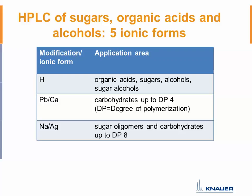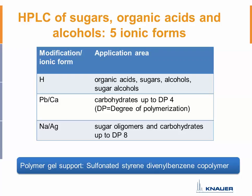If you want to analyze different carbohydrate mixtures and sugars up to a degree of polymerization of four — so these are really small sugars — you have to use the ionic form lead or maybe calcium. But if you want to analyze sugar oligomers and bigger carbohydrates up to a degree of polymerization of eight, you will have to use a sodium or even a silver form. The polymer gel support is always a sulfonated styrene divinylbenzene copolymer.